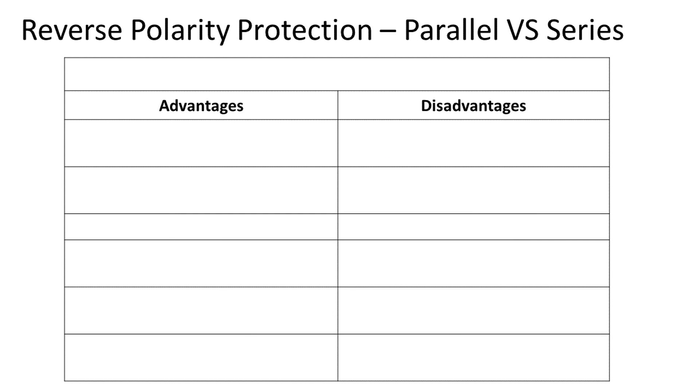Now let's compare the two types of polarity protection. First, the advantages of the parallel diode. 1. It does not drop any voltage unless a series resistance is used. 2. With series resistance, it makes the power supply filtering a little better.